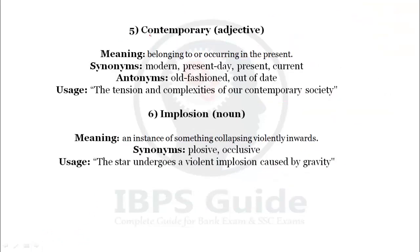Our next word is 'contemporary.' Contemporary is an adjective. 'Contemp' is a root word related to time. Contemporary means belonging to or occurring in the present. When two persons or two incidents exist or happen at the same time, that is called contemporary. Synonyms: modern, present-day, present, and current. Antonyms: old-fashioned and out of date.